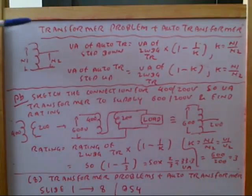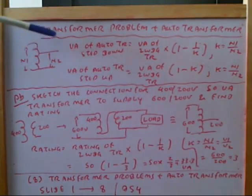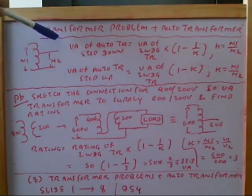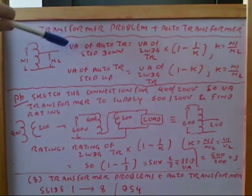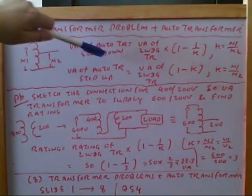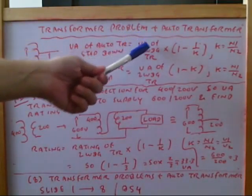The auto transformer advantage is we can reduce the winding and copper weight. But VA rating is going down. VA of the auto transformer for step down equation is the VA of two winding transformer multiplying with 1 minus 1 by k.